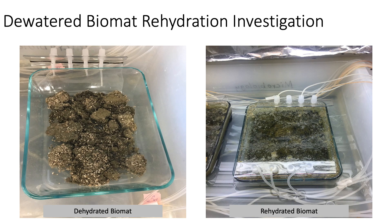Two types of experiments were run. For the biomat rehydration experiment, a dewatered biomat was rehydrated in a flow-through cell utilizing an analog water based on that found in the Prado wetlands and subjected to 12 hours of darkness and 12 hours of light. The takeaway from this experiment is that rehydrated biomat appears to demonstrate similar operational performance as a biomat that has been constantly hydrated.